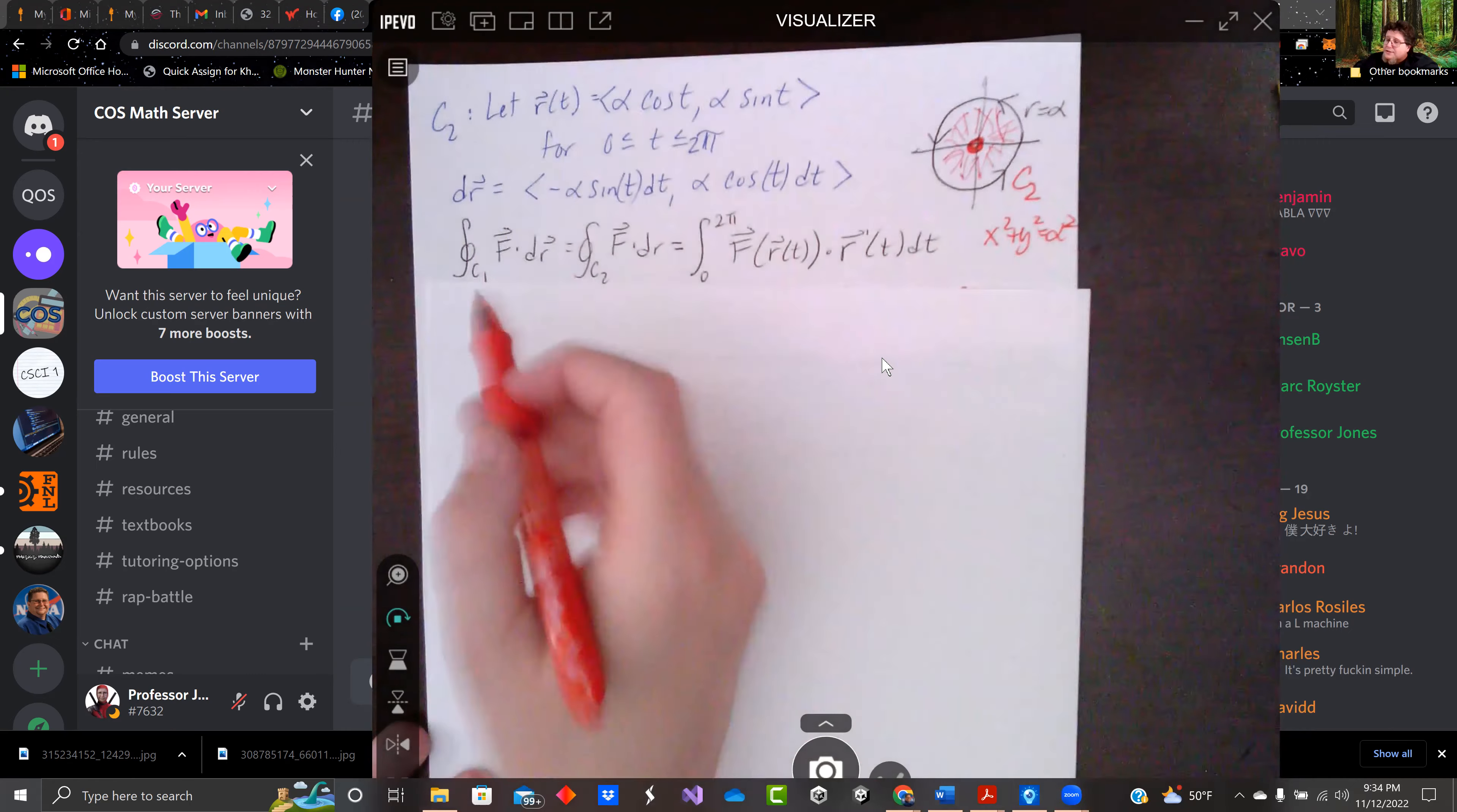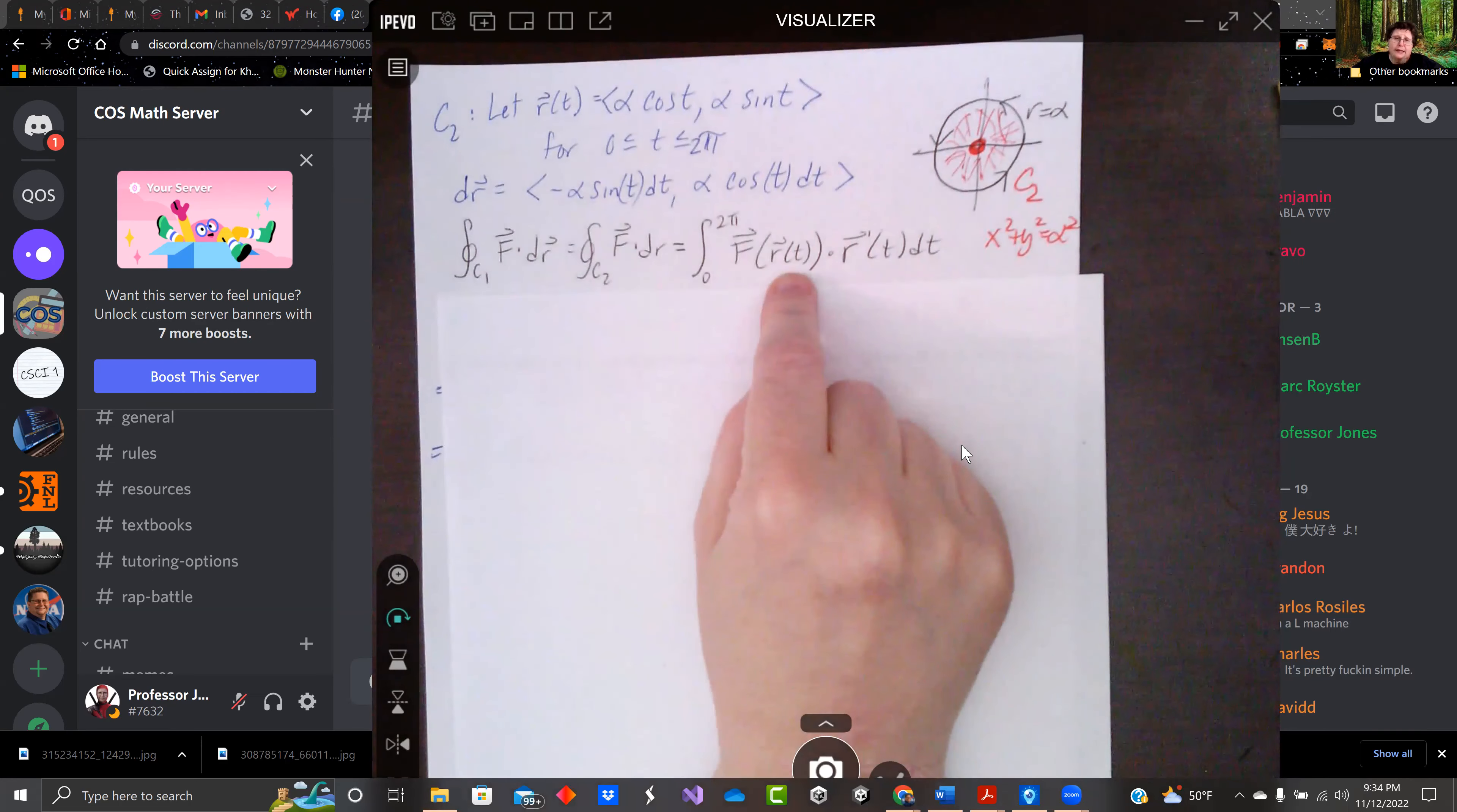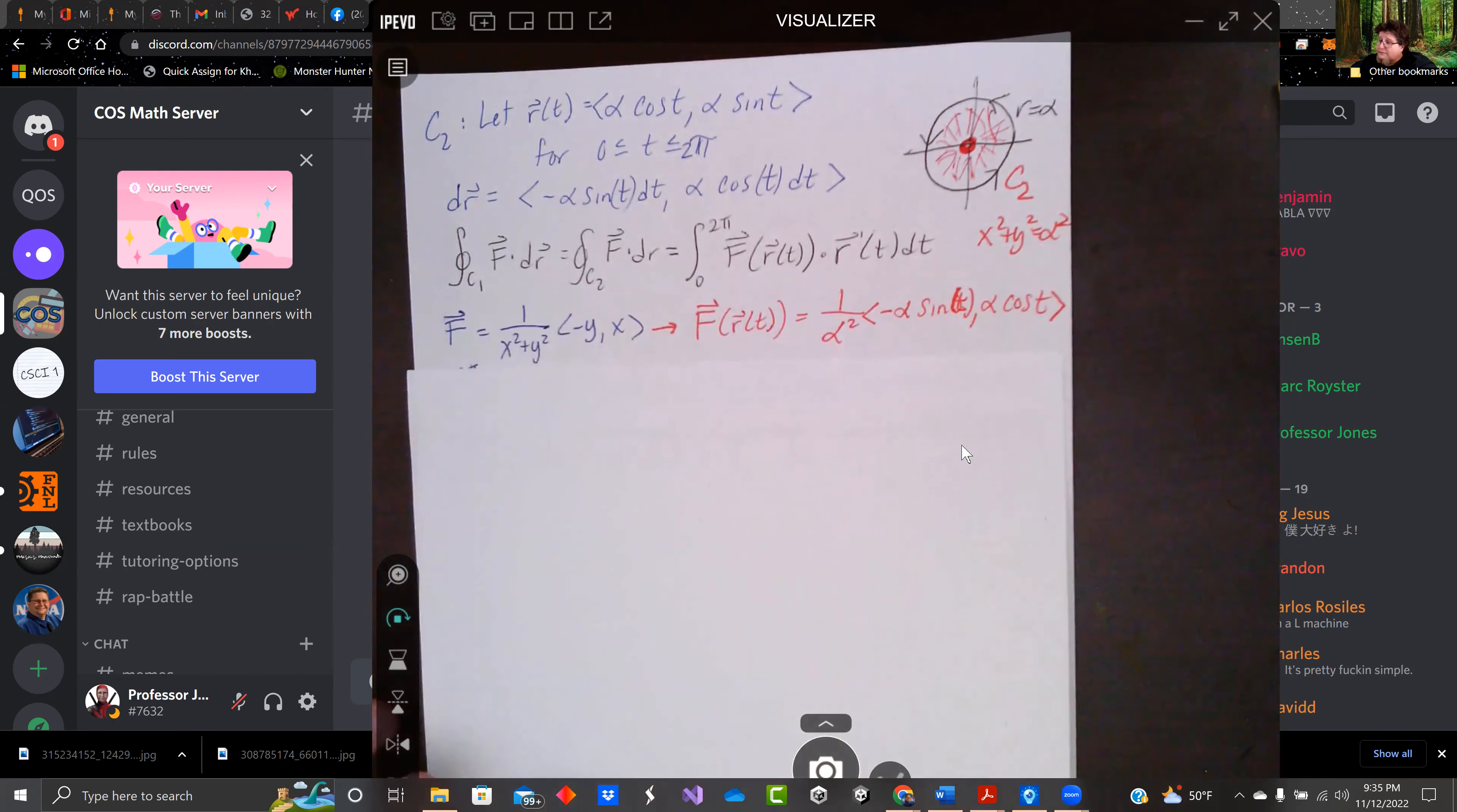So we know the closed integral c1 for f·dr has to equal the closed integral for c2 for f. And we know that integral has to go from zero to 2π. We're doing f·dr, so f we're evaluating in r(t), and dr we've got r'(t) dt. So let's just figure out what that is and go with it. We've got dr/dt listed up here. Let's work it out.